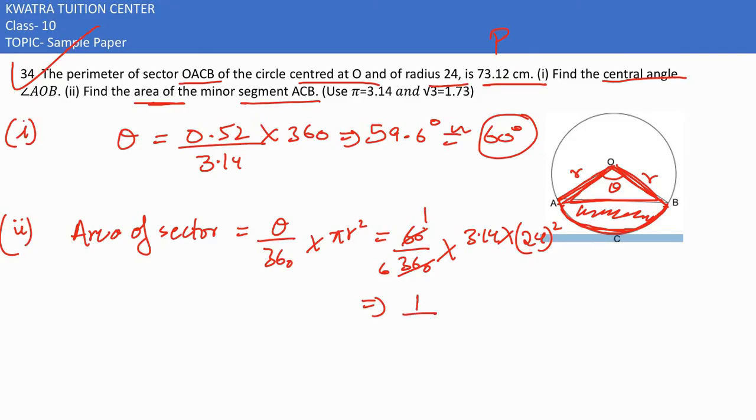60 over 360 reduces to 1/6. So 1 by 6 into 3.14 into 24 into 24. Cancel 6 with 24 to get 4. Now 24 into 4 is 96, and 96 multiplied by 3.14 is approximately 301.44 square centimeters.